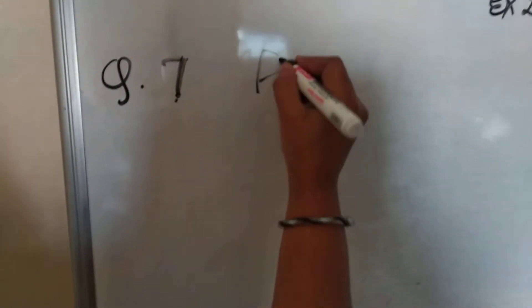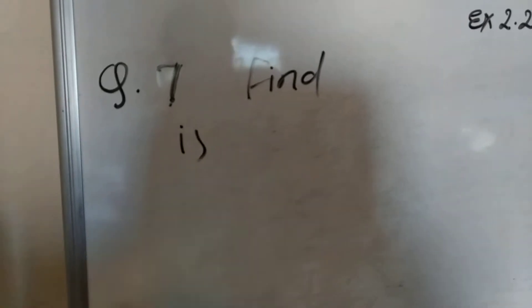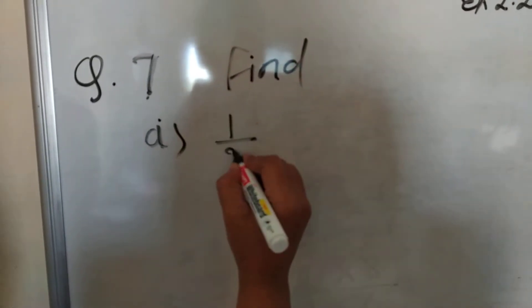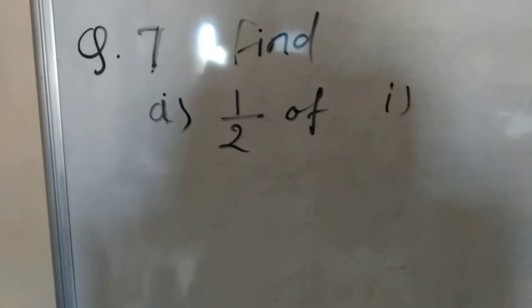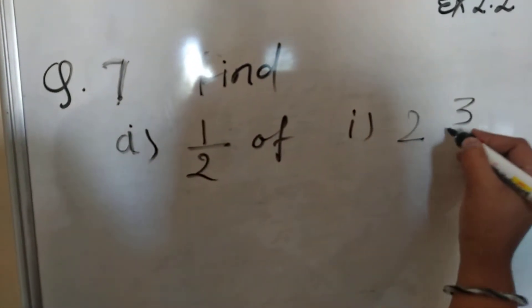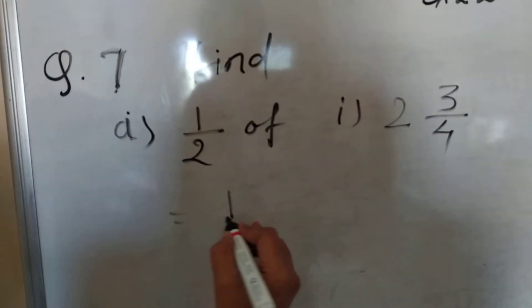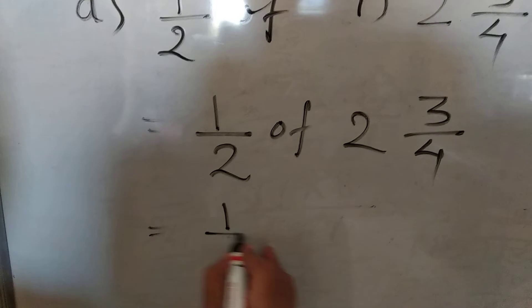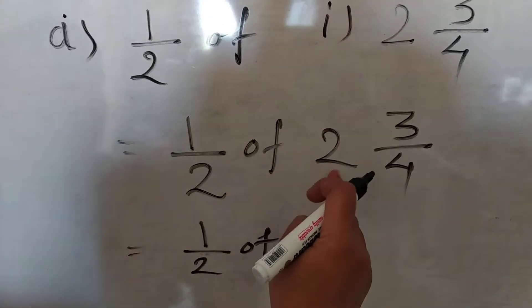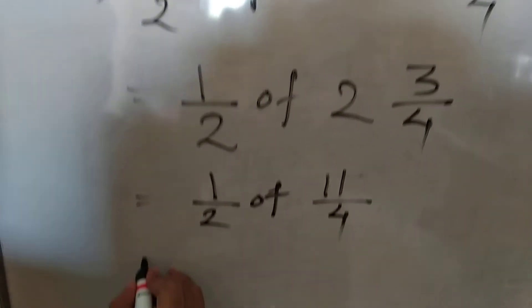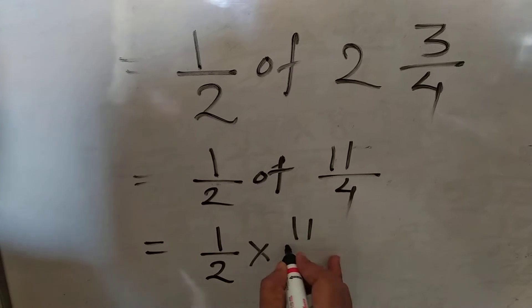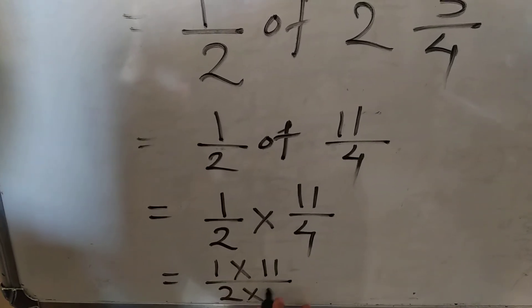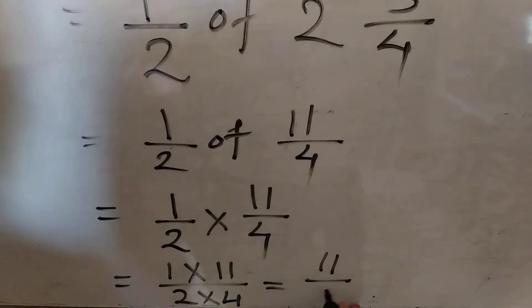Now question number 7. We have to find: the first one is 1/2 of 2 and 3/4. So we have to find out 1/2 of 2 and 3/4. Convert this mixed number into an improper fraction: 4 twos are 8, 8 plus 3 is 11, giving 11/4. So 1/2 multiplied by 11/4 equals 1 multiplied by 11 upon 2 multiplied by 4. That gives 11 upon 8.